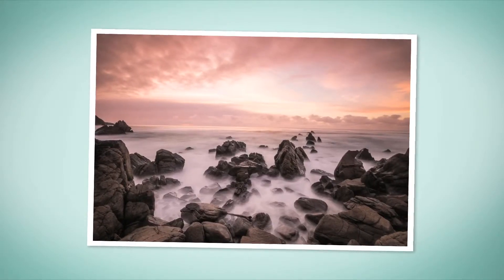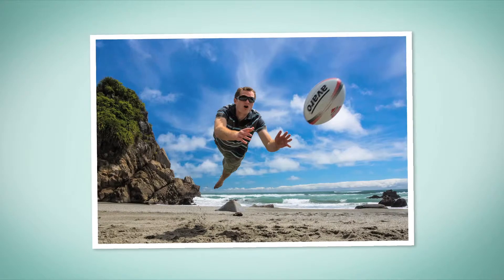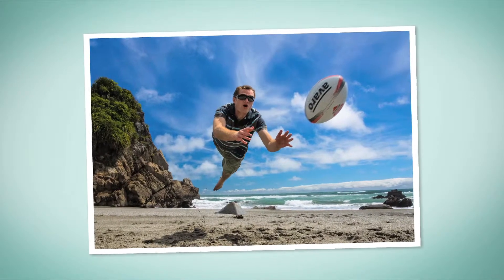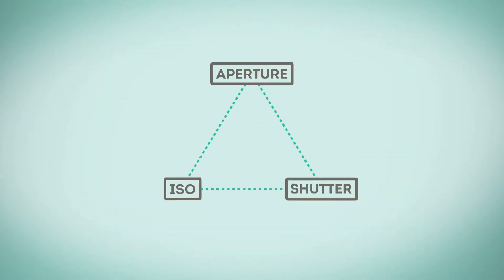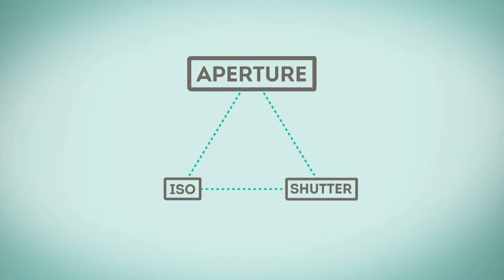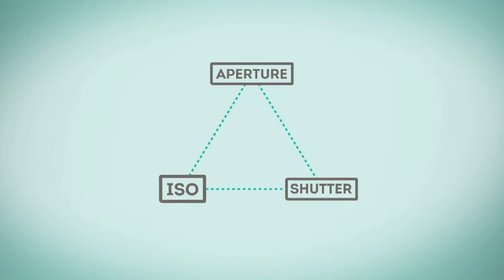Now we have a basic understanding of exposure, let's dive a little deeper. Camera exposure is controlled by these three elements: aperture, shutter, and ISO.